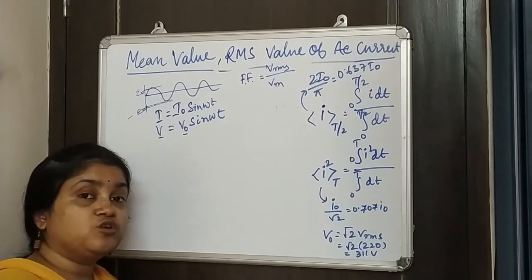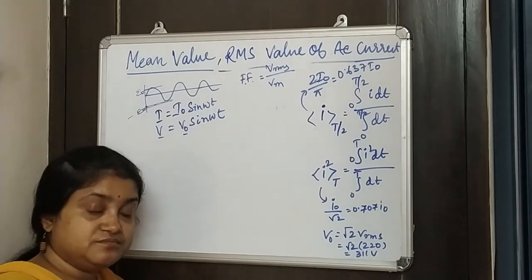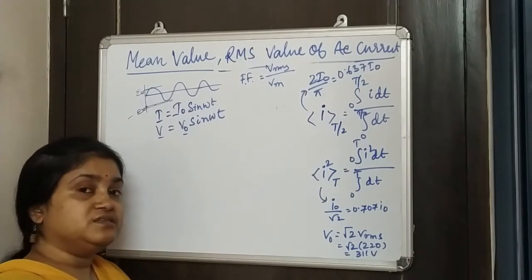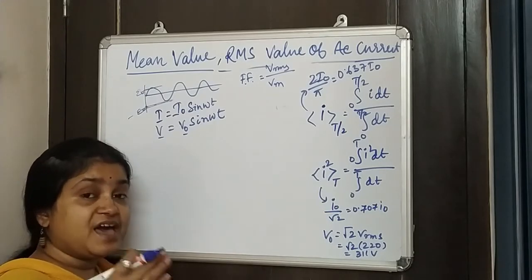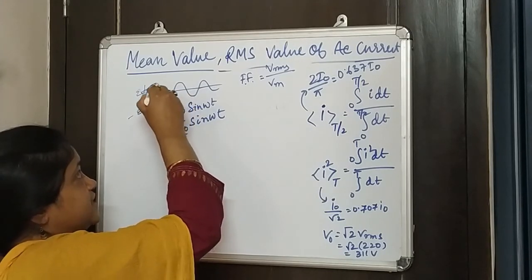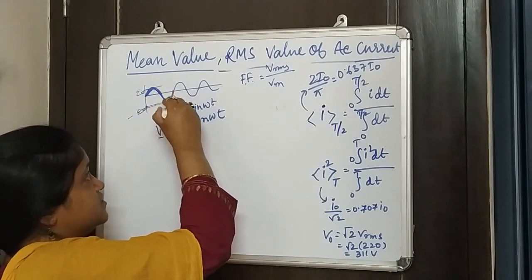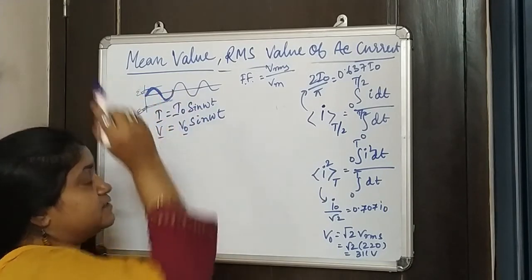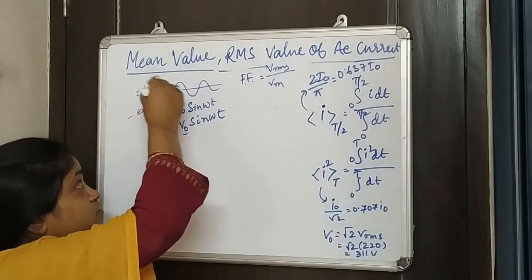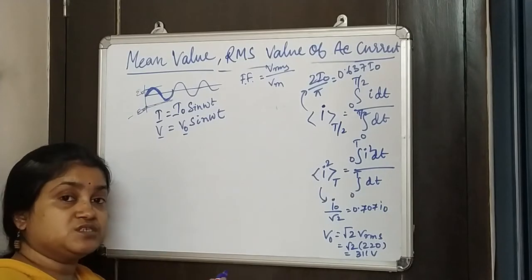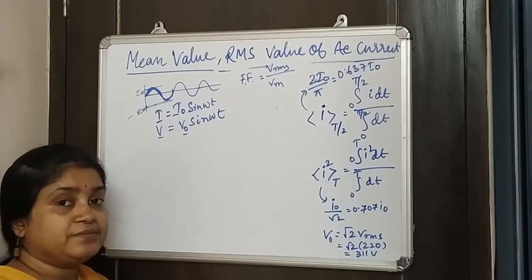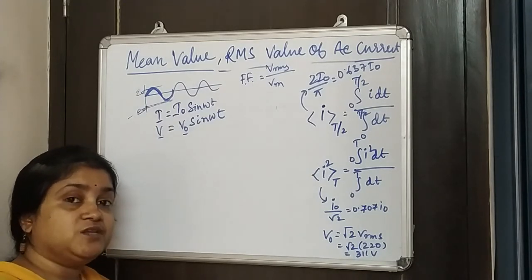First, let's look at the mean current or mean voltage. The mean means it is the average over the entire cycle. The cycle starts, goes up, comes down — that is a full cycle. If we take the average over a full cycle, you see the first half is positive and the second half is negative, so the average value comes out to zero.